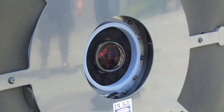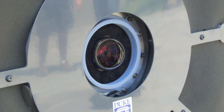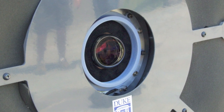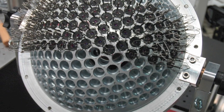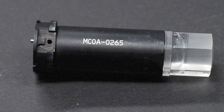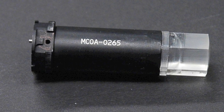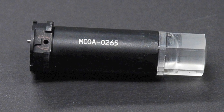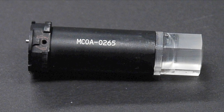As opposed to a conventional camera that tries to map everything onto a focal plane, we're trying to map everything onto a sphere. But then on the back of that sphere, we use these micro-optics to do local correction of the spherical distortion.